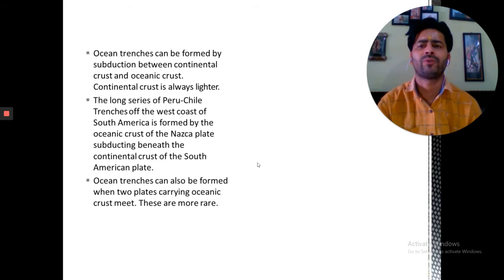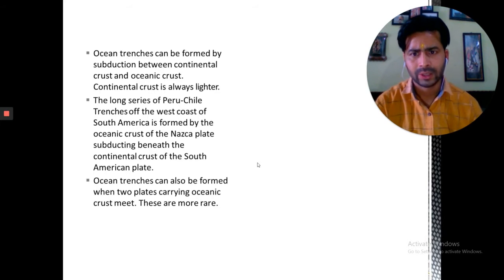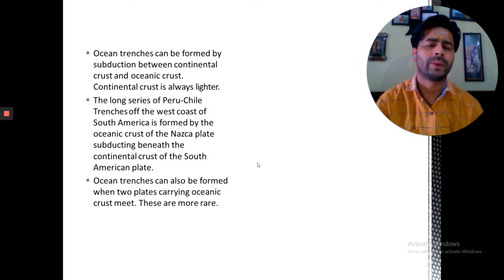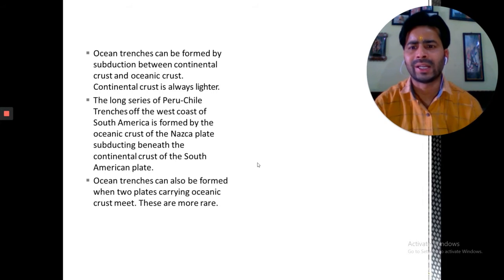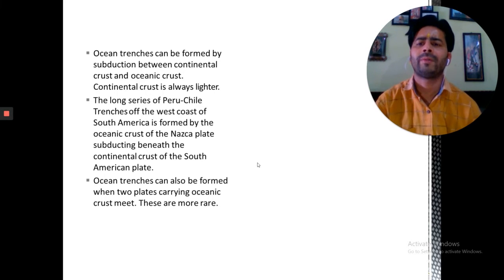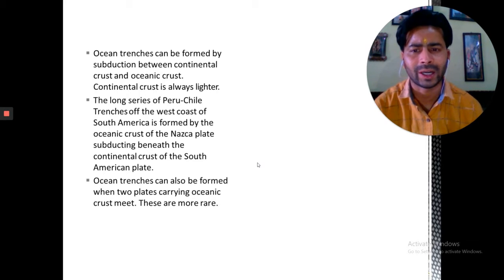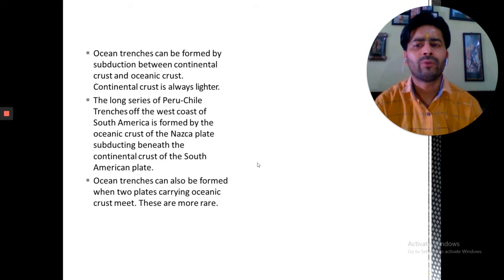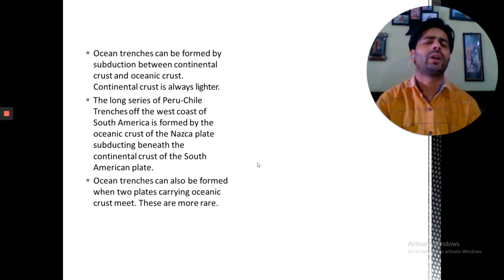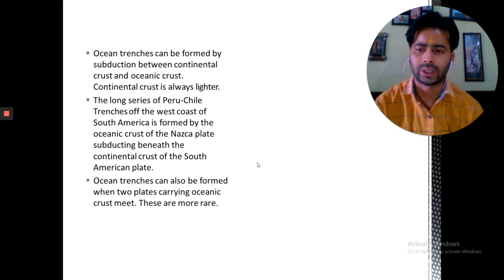Ocean trenches can be formed by subduction between continental crust and oceanic crust. The continental crust is always lighter according to the oceanic crust. A long series of Peru-Chile trenches off the west coast of America is formed by the oceanic crust of the Nazca plate subducting beneath the continental crust of South America. Oceanic crust can also be formed when two plates carrying oceanic crust meet.